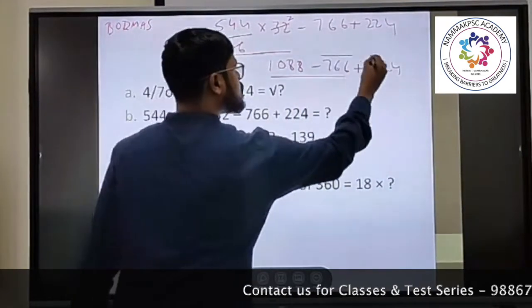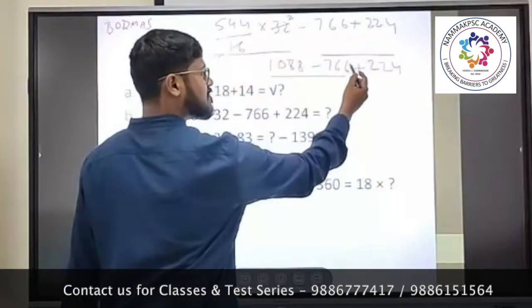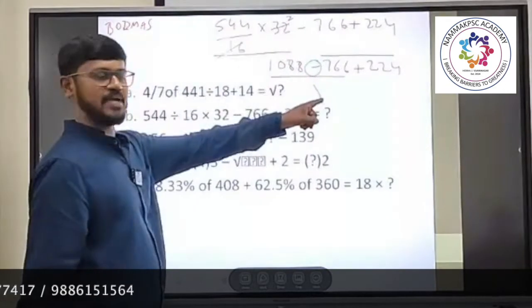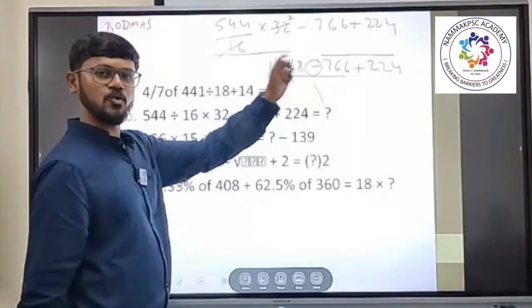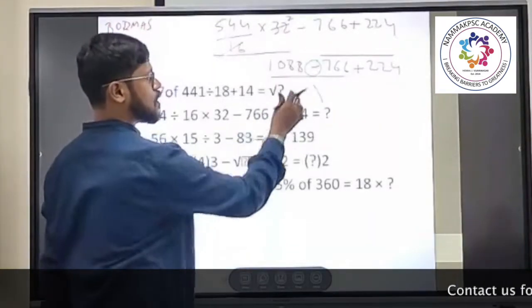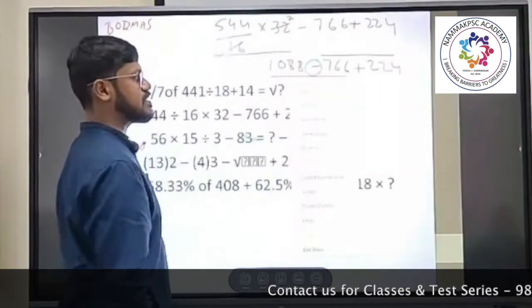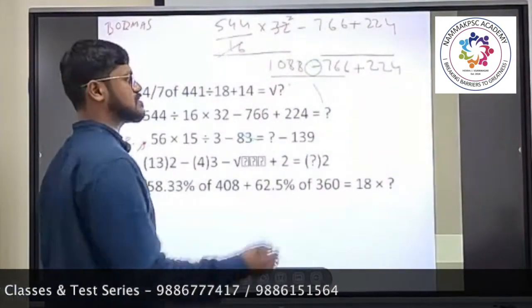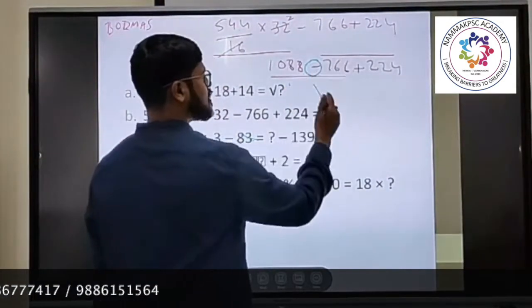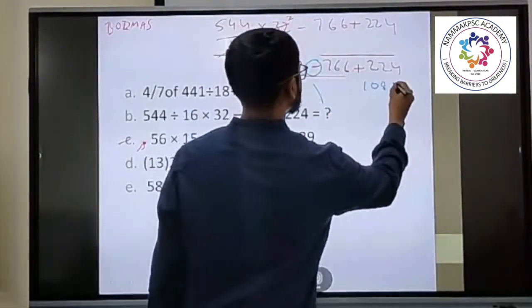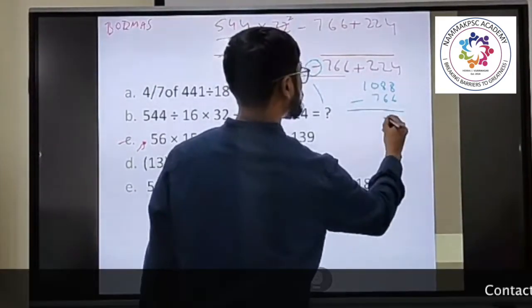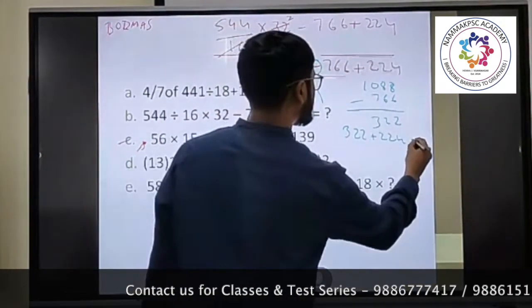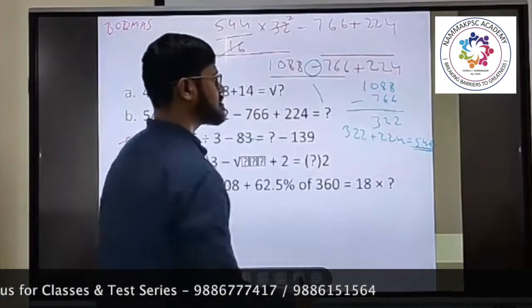Now you can solve this equation either way — you must consider that minus sign. If you take all the plus signs together, either way you get the same answer. So if I take 1088 minus 766, you get 322. Then 322 plus 224 gives 546 as the answer. That is the first method.